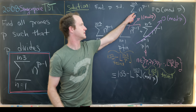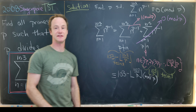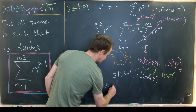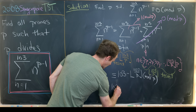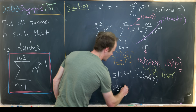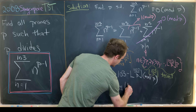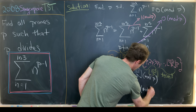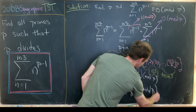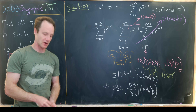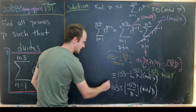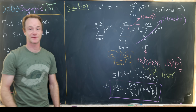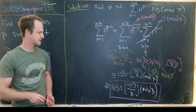Since we want this to be congruent to 0 mod p, we need 103 to be congruent to floor(103/p) mod p. So we've reduced the problem to determining which primes p satisfy this congruence.